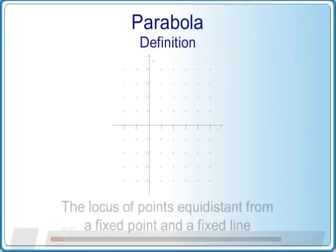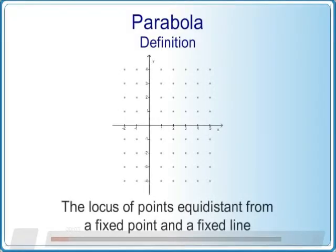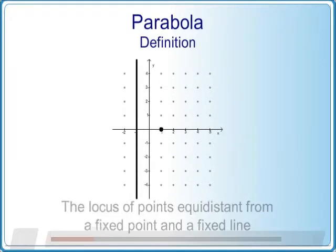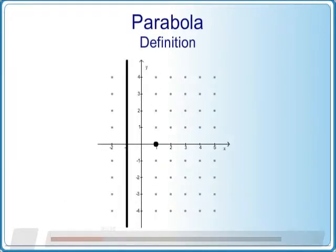A parabola is defined as the locus of points equidistant from a fixed point and a fixed line. The fixed point is called the focal point, while the fixed line is called the directrix.